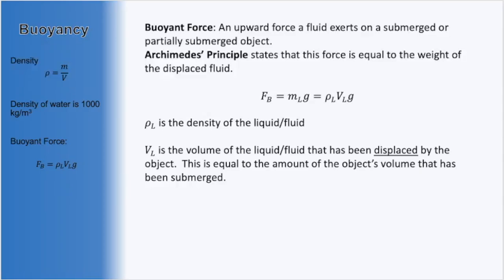Since the weight of the fluid can be expressed as the mass of the fluid times the acceleration due to gravity, and since the mass of the liquid or fluid can be expressed in terms of density times volume, the equation we end up using for the buoyant force is that it equals the density of the fluid multiplied by the volume of the liquid that has been displaced by the object, times g, the acceleration due to gravity.